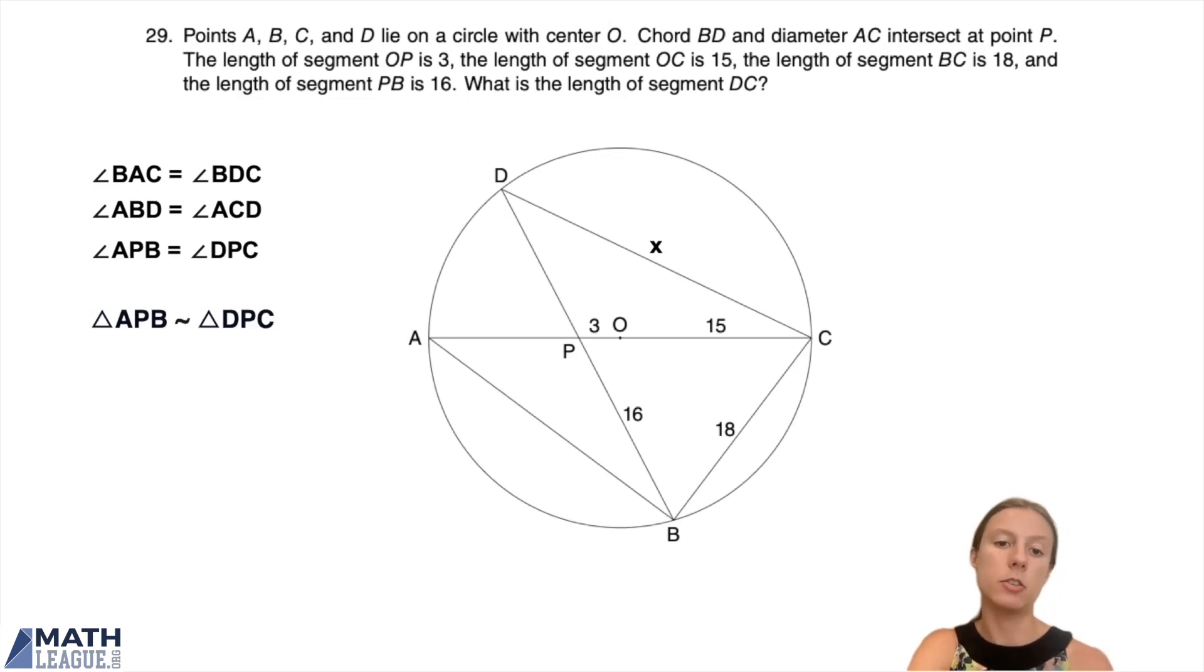All right, this is fantastic, right? We've got similar triangles, which we're expecting, and DC is a side length of one of the triangles, which means we've got a really clear route to finding it.